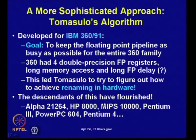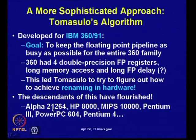Because of these advantages, some version of Tomasulo's approach has been used in more recent processors. Although it was developed for the IBM 360/91, subsequent processors like DEC Alpha 21264, HP 8000, MIPS 10000, Pentium 3, Power PC 604, and Pentium 4 have all used Tomasulo's approach in some modified form.